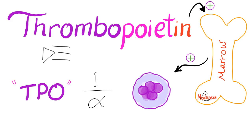Poiesis is the synthesis of cells. Thrombopoietin is the protein that helps synthesis of thrombocytes, aka platelets. Thrombopoietin, also known as T-Po, is the topic of today's video, and let's get started.